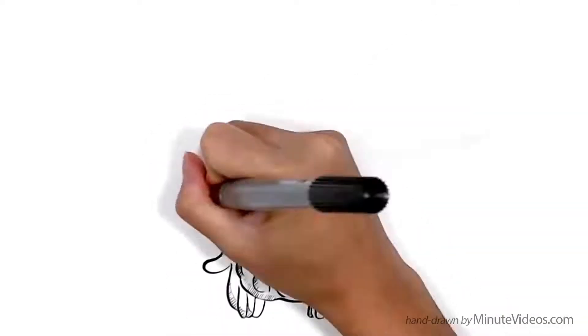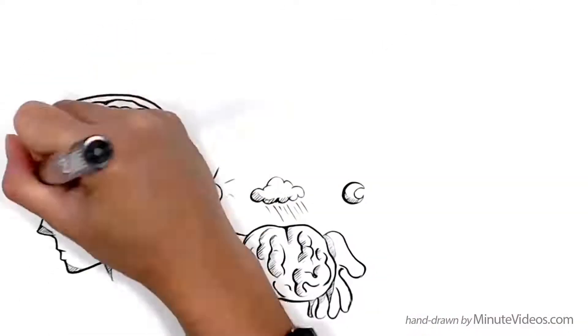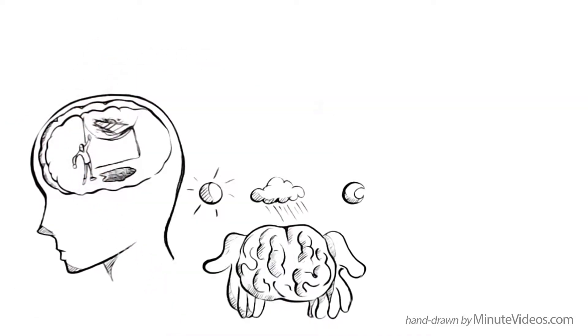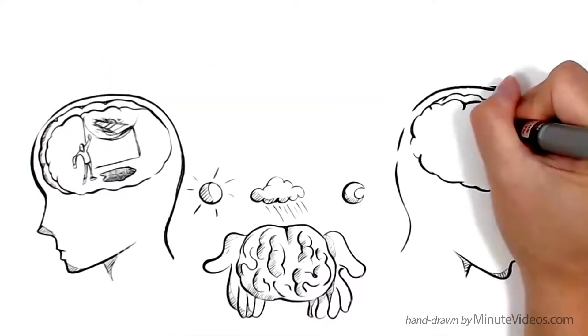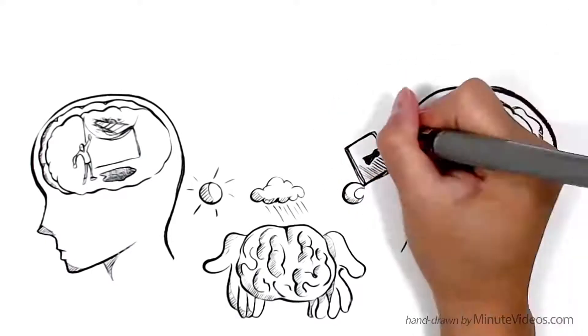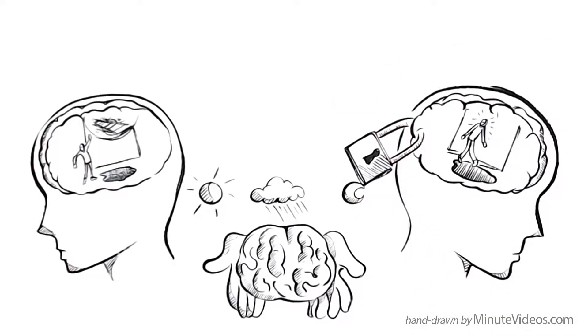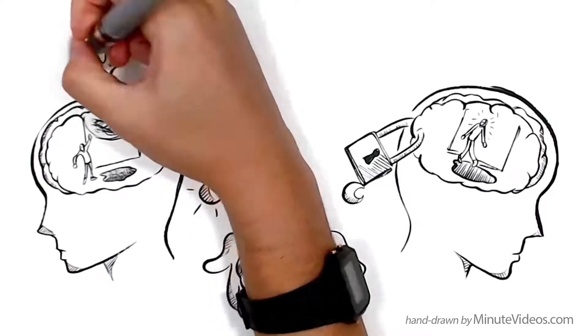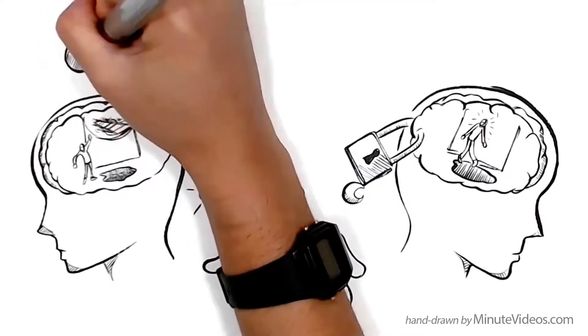There are two types of mindset we can cultivate. One that embraces problems as opportunities to learn, and one that avoids them, often out of fear to fail. People that avoid conflicts can be described as having a fixed mindset. Those who see problems as interesting challenges have a growth mindset.